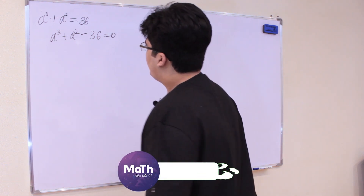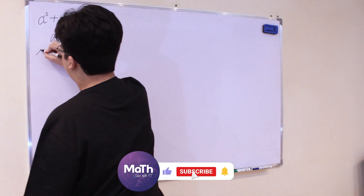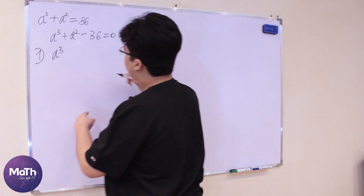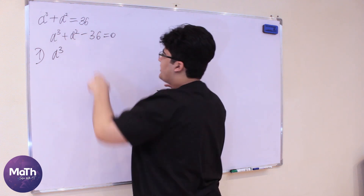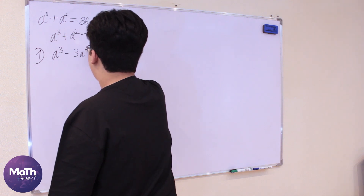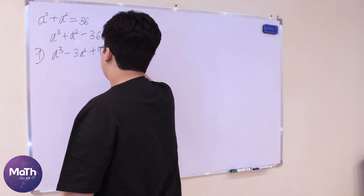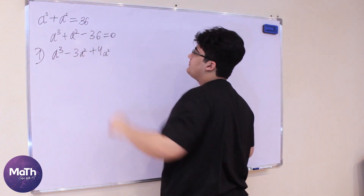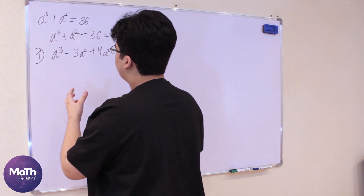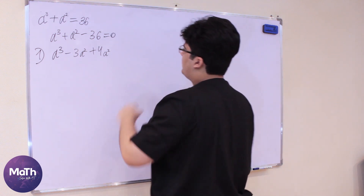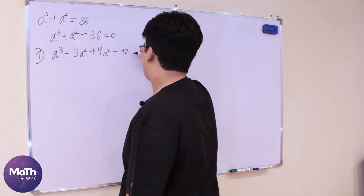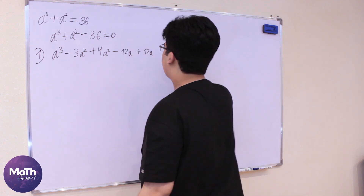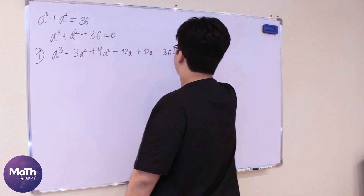My first approach: I'll write a³ and show the a² as -3a² + 4a². Nothing has changed — it's still a². Then let's write -12a + 12a, which gives zero, so nothing has changed again.